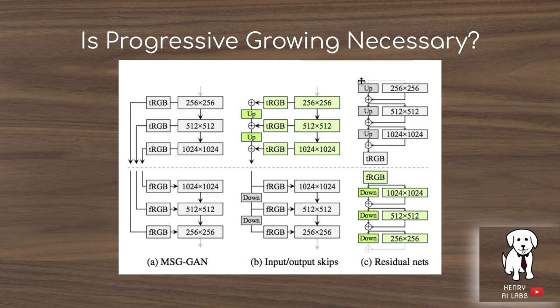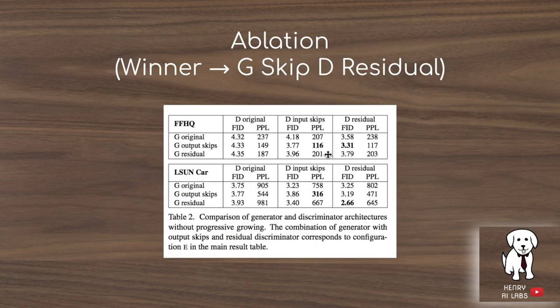In the ResNet approach, you isolate the intermediate feature map, do the upsampling with convolutional layers, and then do the element-wise addition. The key difference is that the ResNet has previous feature maps with more direct impact on future maps. They do an ablation showing that there's really not much of a difference between the skip and the residual in the resulting image quality.